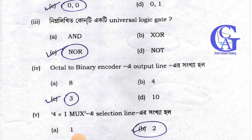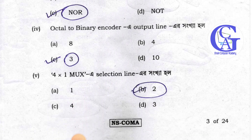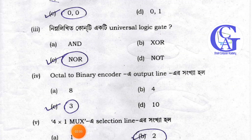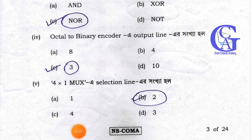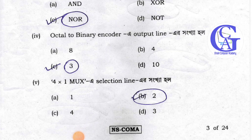Octal is binary. The output line is 3. Now let's see. For the four-to-one multiplexer, select one line.